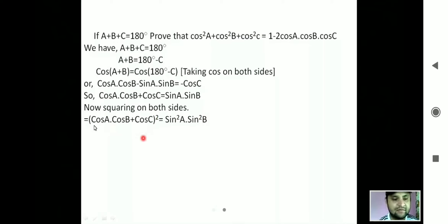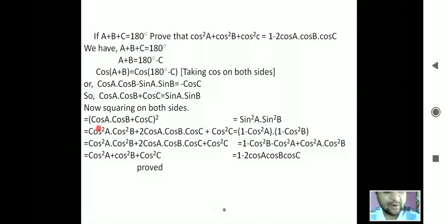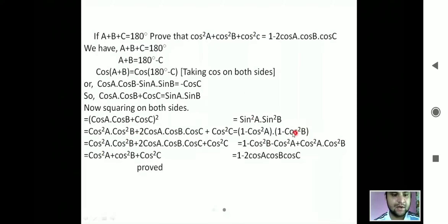On the left hand side we apply the formula of (a + b)², assuming cos(a)cos(b) to be 'a' and cos(c) to be 'b'. Expanding gives cos²(a)cos²(b) + 2cos(a)cos(b)cos(c) + cos²(c). On the right side, sin²(a) = 1 minus cos²(a) and sin²(b) = 1 minus cos²(b).